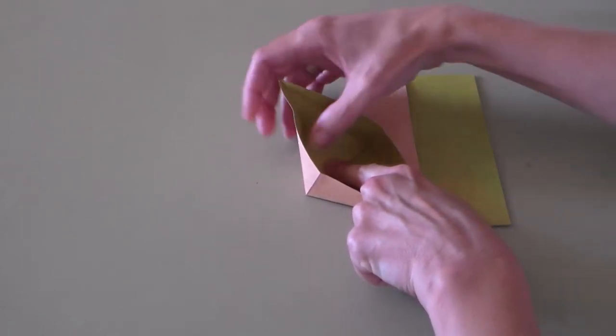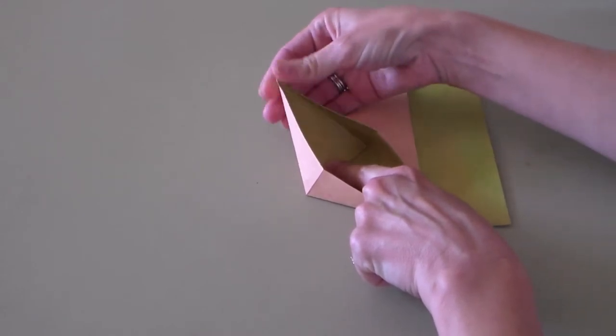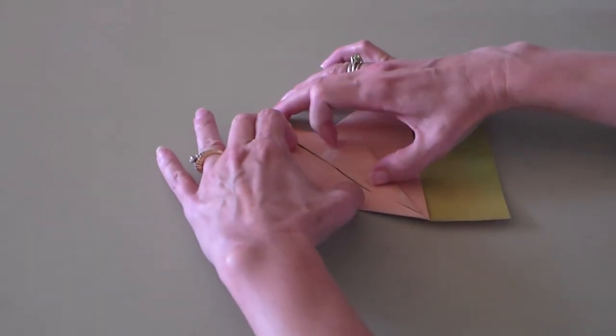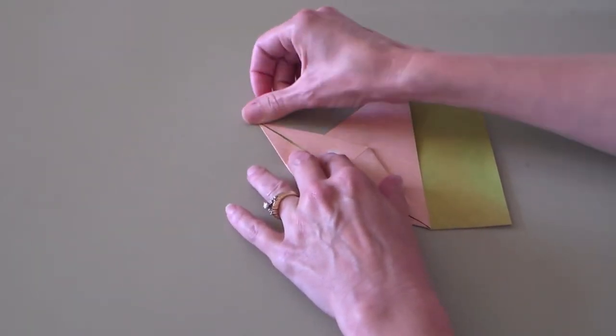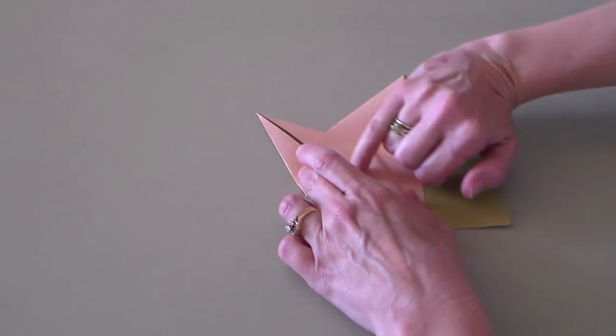And then you want to reverse the two folds up on the top that we made before. And this will all just collapse into a large diamond shape. And see how there's a little bit of space here in the center? You want that.